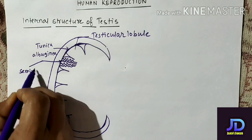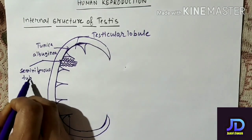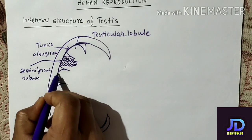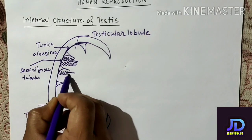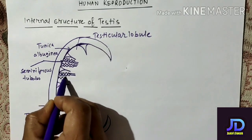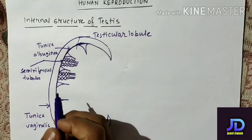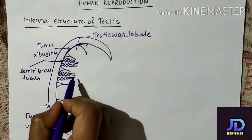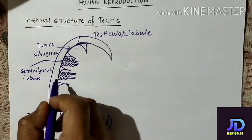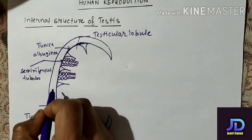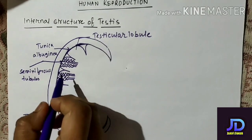These coiled tube-like structures are called seminiferous tubules. Now remember, inside these seminiferous tubules sperms are formed. Sperms are formed inside the seminiferous tubules.